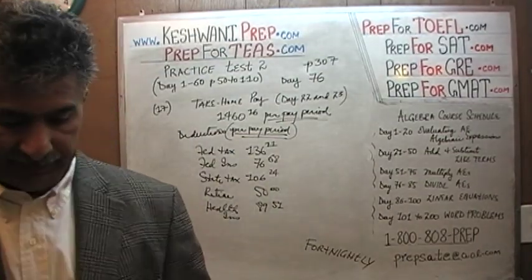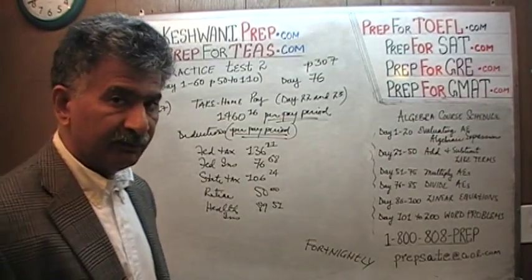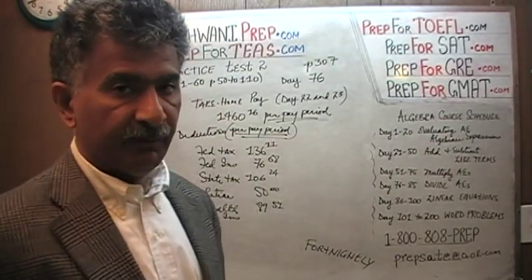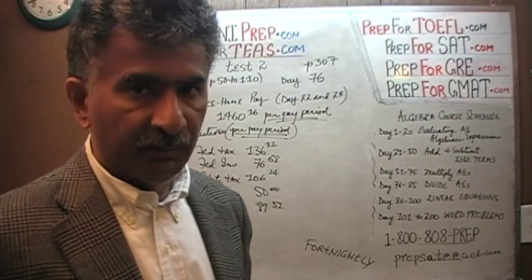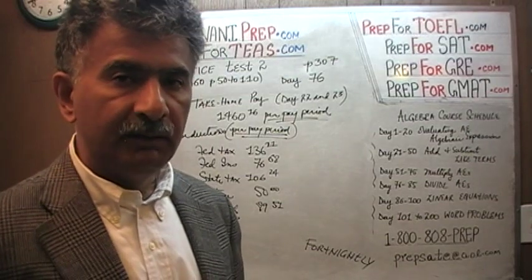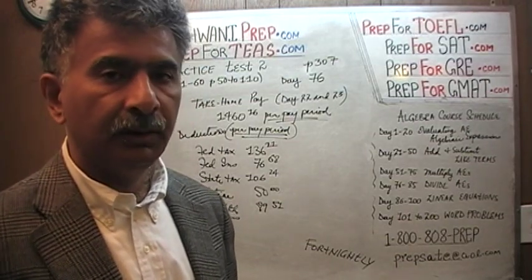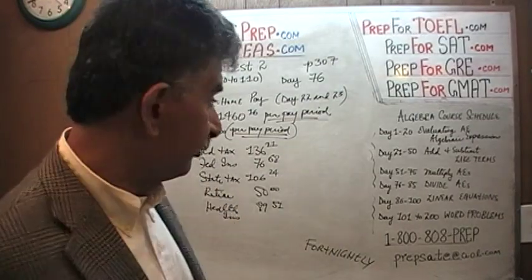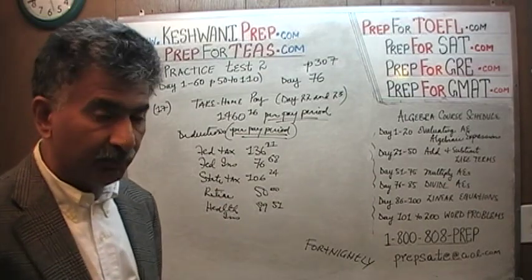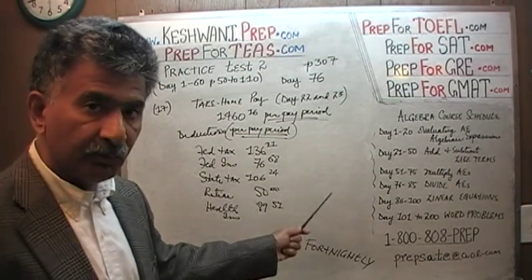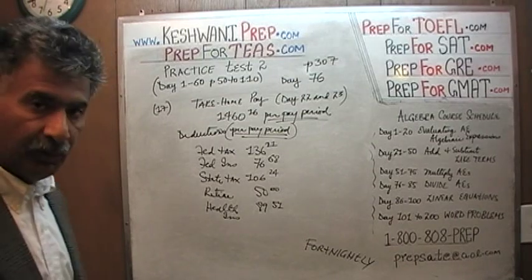We are not going to waste our time adding up these figures precisely — there is no need for it. You can round things up, and the answer choices are far enough apart that you should be able to locate the right answer with approximation. In the rare event the answer choices are too close, you find the adjustments at the end, as I have shown before.